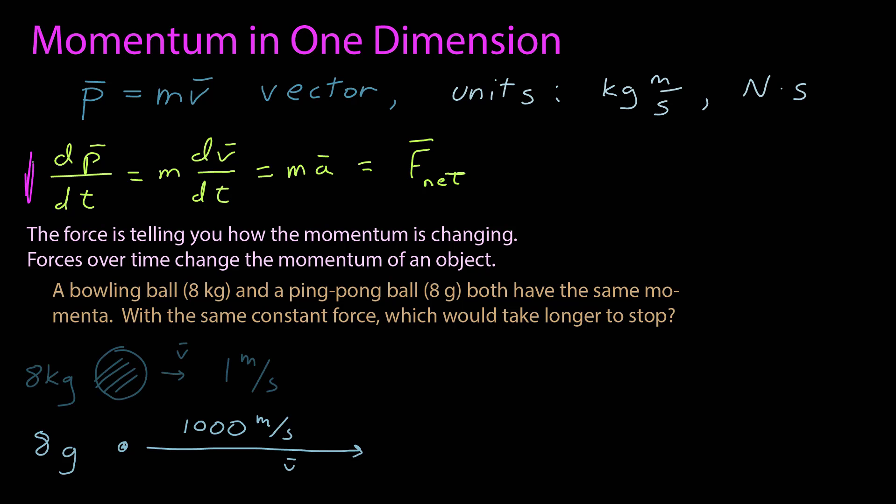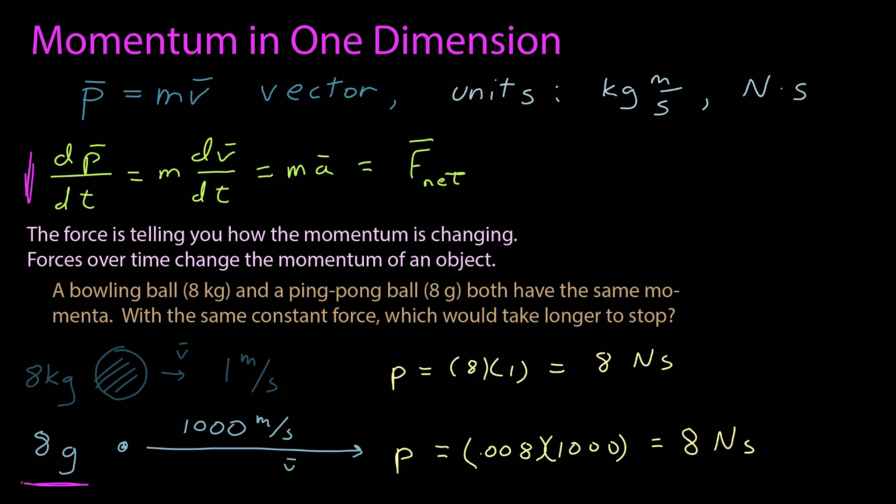If I have an eight kilogram bowling ball, it may have a small velocity of one meter per second. That means my eight gram ping-pong ball has a very large velocity of a thousand meters per second to have the same momentum. The momentum of the bowling ball is eight times one. The momentum of the ping-pong ball is 0.008 times a thousand, giving the same momentum. Since the net force changes momentum with respect to time, with the same constant force applied to each, it takes the same length of time to bring them to rest.